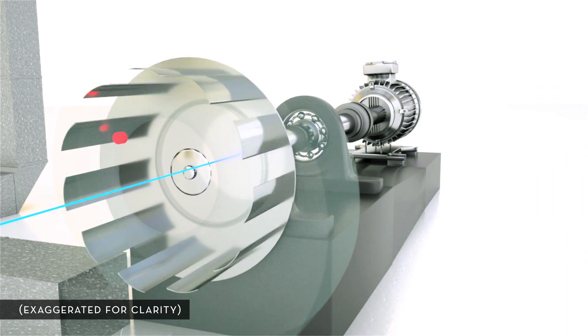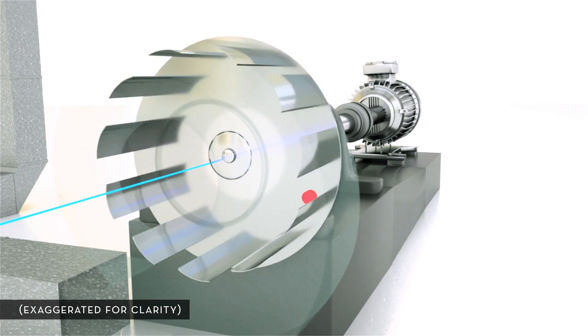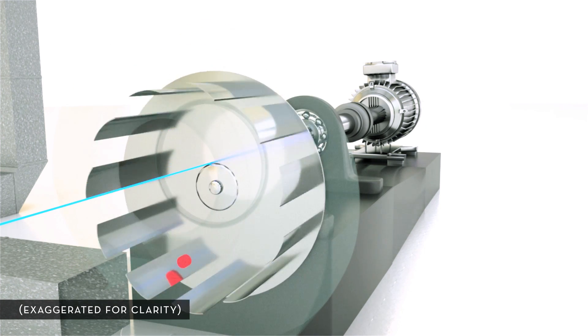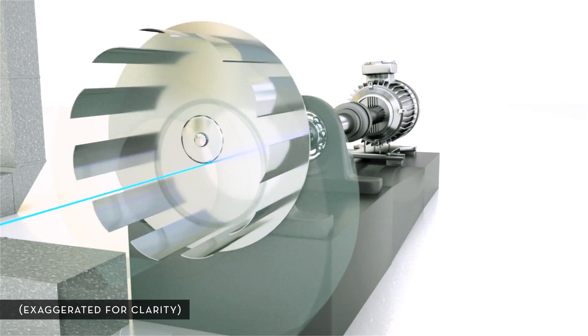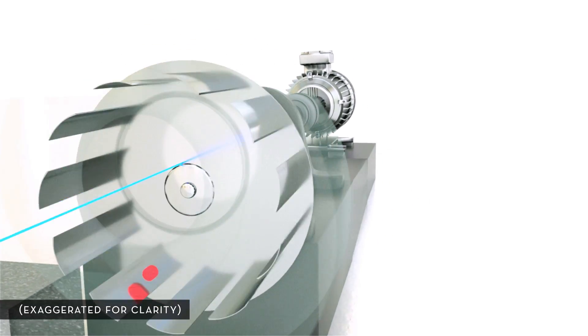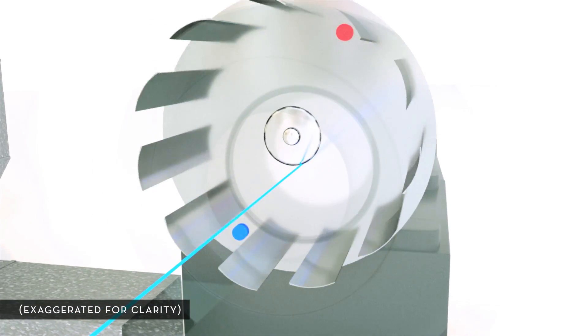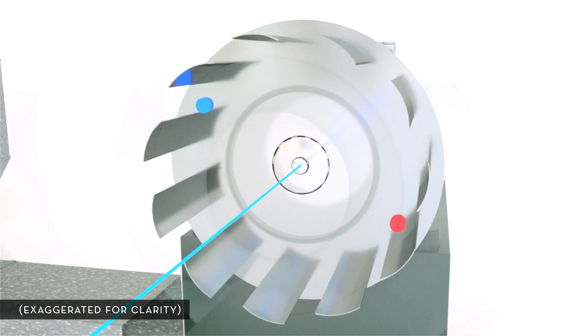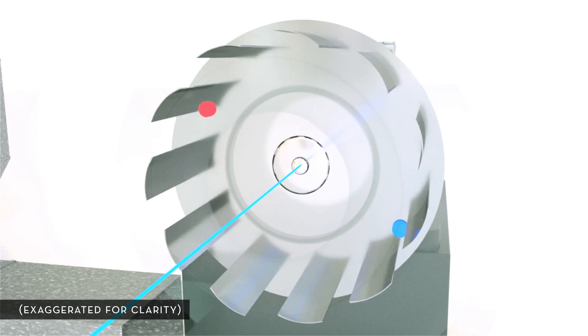Similar to the process an auto mechanic employs to speed balance the tires of a car, rotating machinery is balanced by either adding weight to the light spot or removing weight from the heavy spot. In this illustration, we will add weight to counterbalance the heavy spot so that mass is evenly distributed around the axis of rotation.